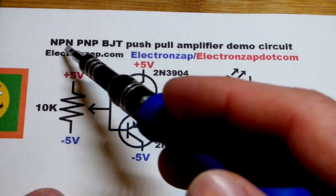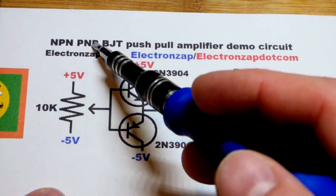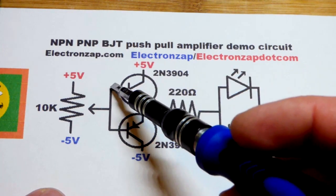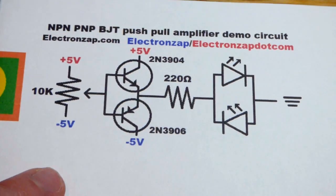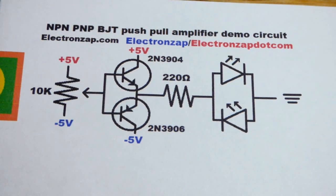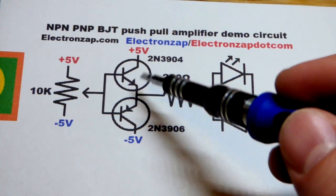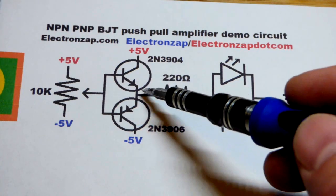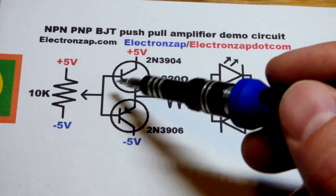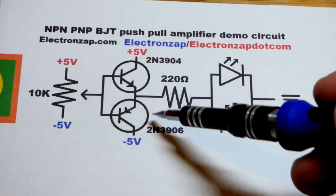In this video we're going to use an NPN bipolar junction transistor and a PNP bipolar junction transistor wired as a push-pull amplifier. We're going to take the voltage we made emitter followers with one or the other that did the same thing. It takes the voltage coming to the base and outputs that voltage.